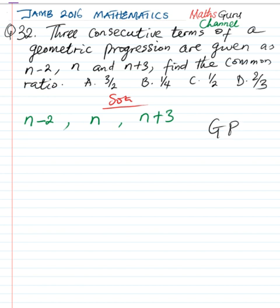That is, n over n-2 is equal to n+3, which is the third term, over the second term.